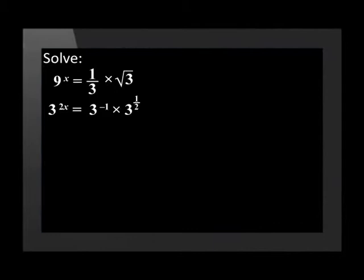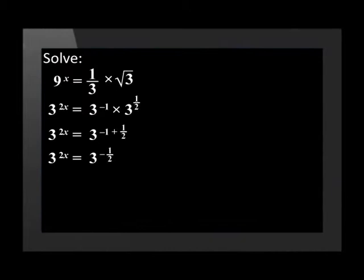Remember, by bringing 3 to the top, the exponent becomes negative. And the square root of 3 is equal to 3 to the power of a half. The bases on the right hand side of the equation are the same, which means we can add the exponents negative 1 and a half. We now have the equation 3 to the power of 2x is equal to 3 to the power of negative one half.